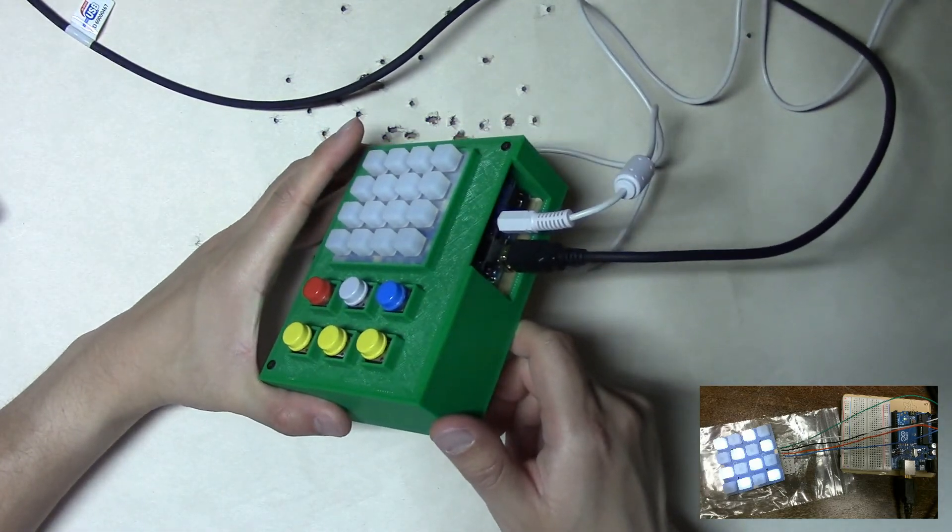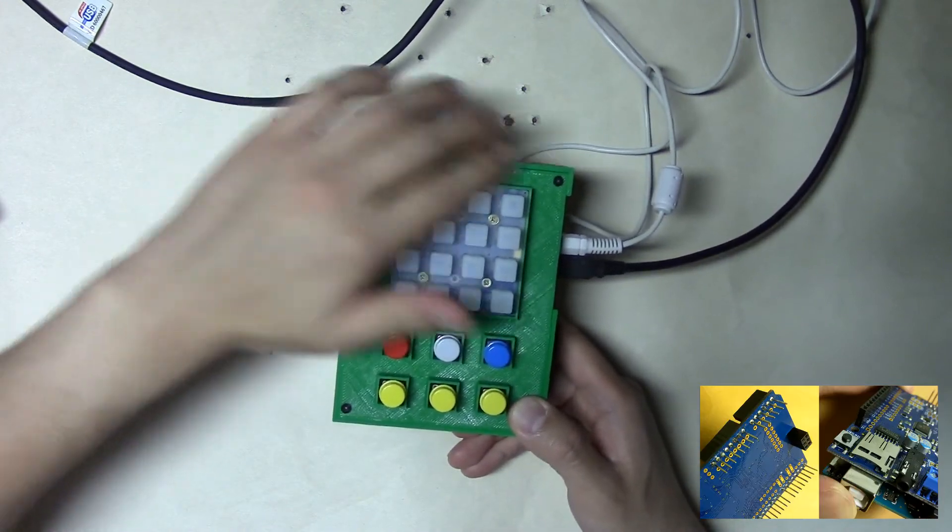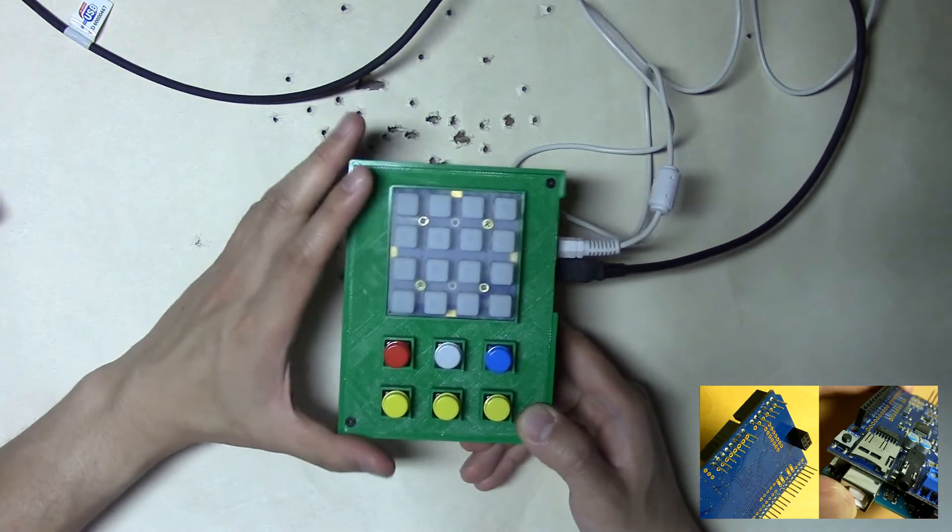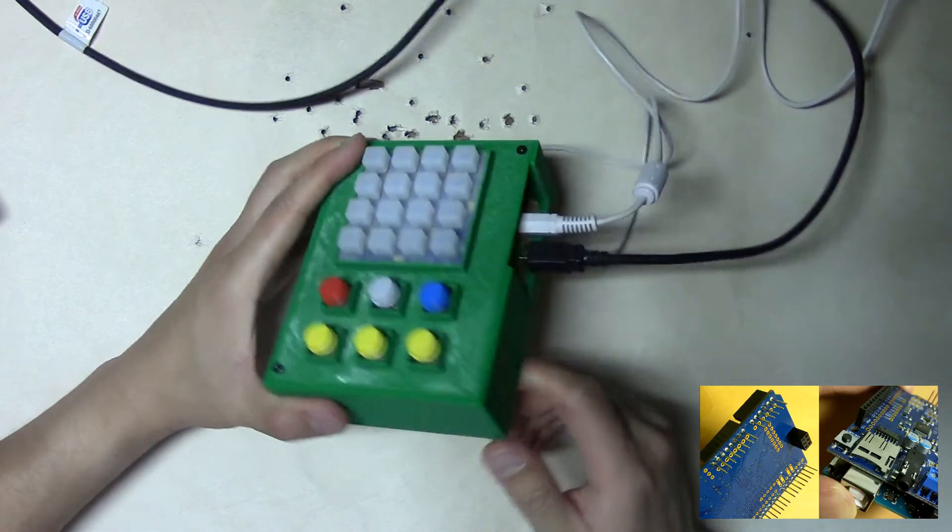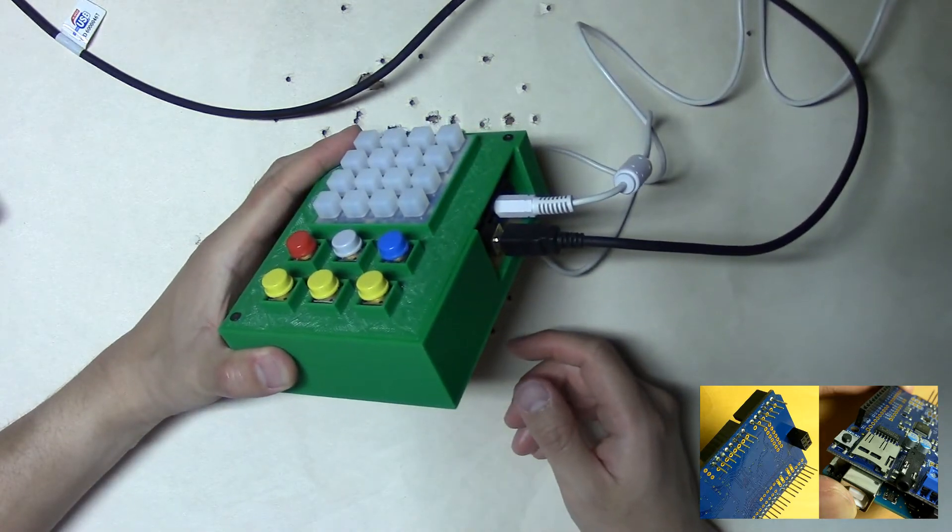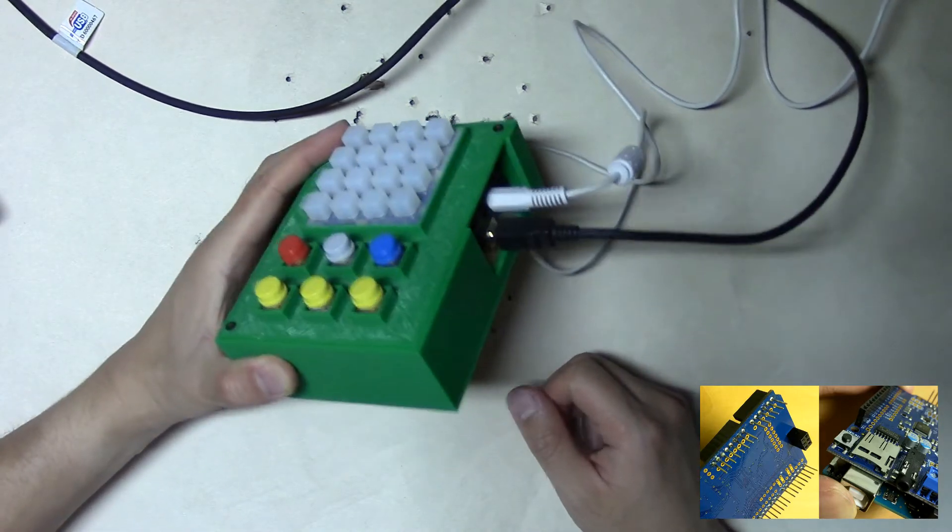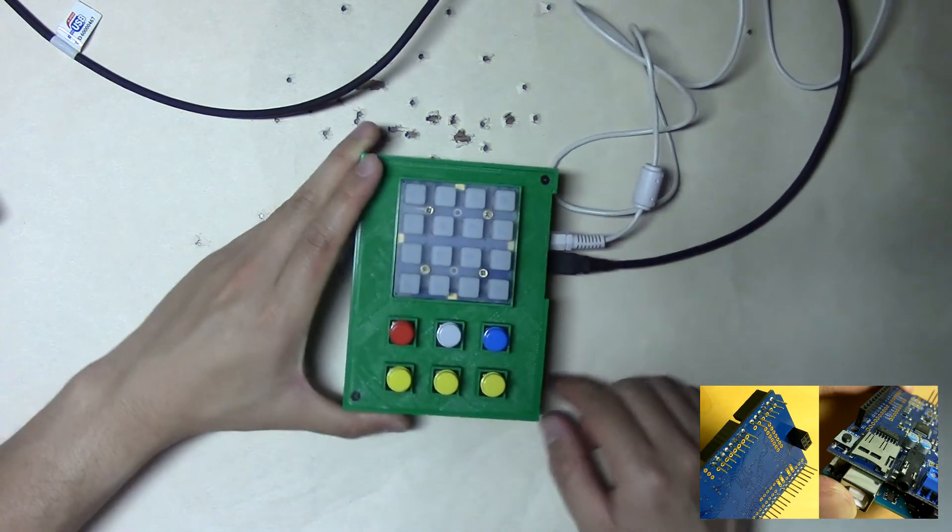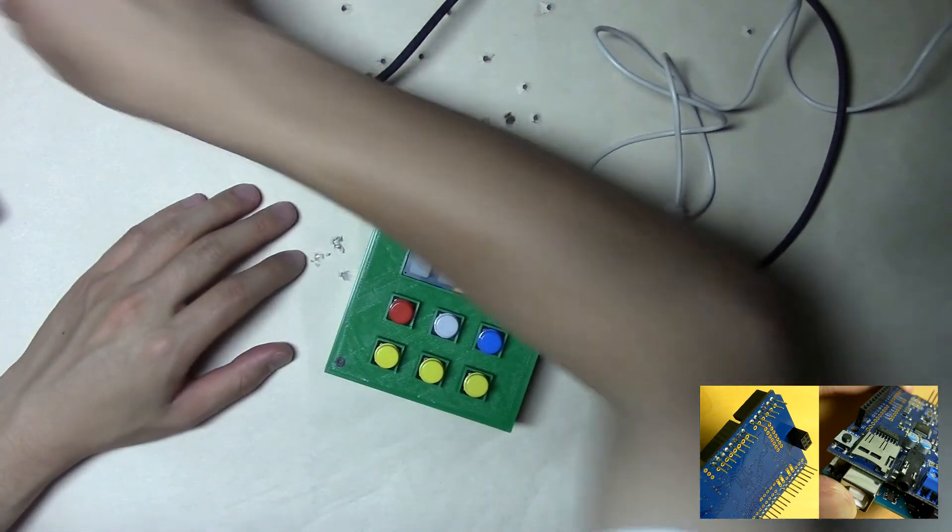Anyway, now I know that I can actually do rounded corners and do a lot of different interesting things with 3D printing. So I'm just going to build V2 instead. Alright, let's check it out and see how it works.